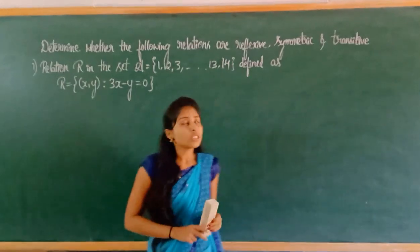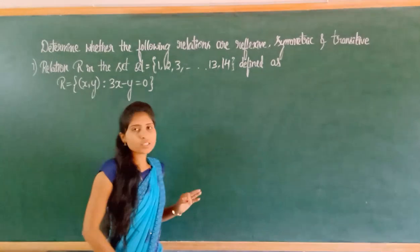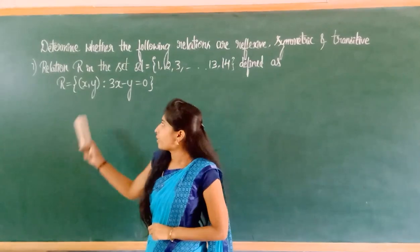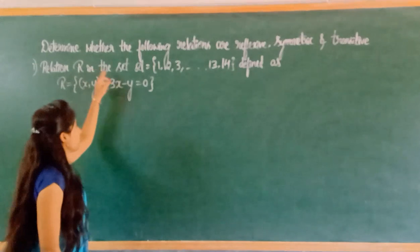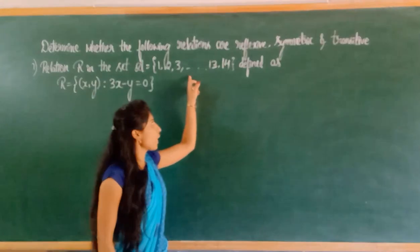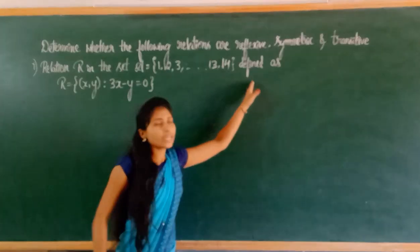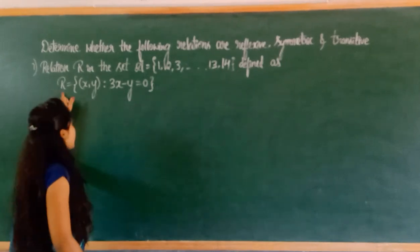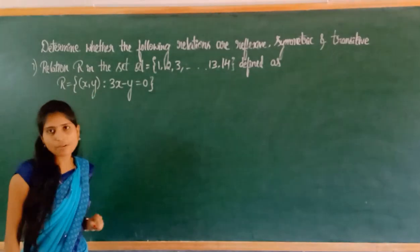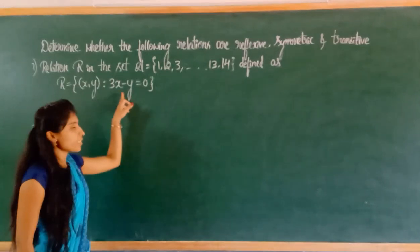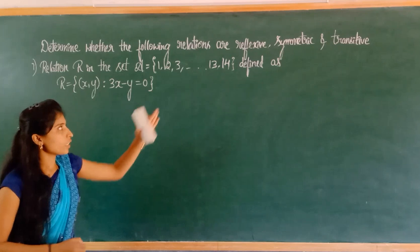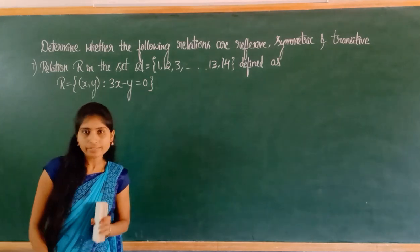We have to check whether the given relations are reflexive, symmetric, and transitive or not. The given relation is in the set A, where set A contains the numbers 1, 2, 3 up to 40. The relation R is defined as the set of all (x, y) such that 3x minus y is equal to 0. Now we have to check for reflexive, symmetric, and transitive.